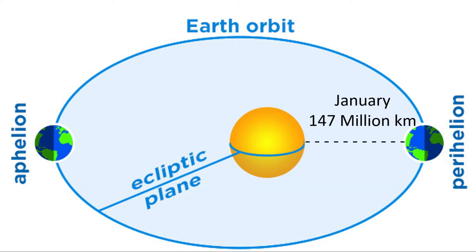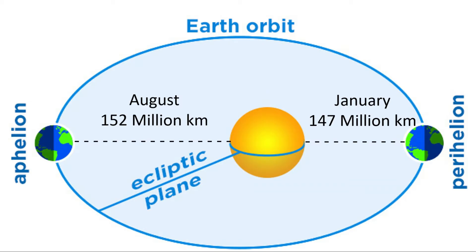The perihelion happens in January, and the Earth is around 147 million kilometres away from the Sun. The point at which the Earth is farthest away from the Sun is called the aphelion, which happens in August, when the Earth is 152 million kilometres away. The average distance is 150 million kilometres, called one astronomical unit, or one AU. It takes light about eight and a half minutes to travel one AU.